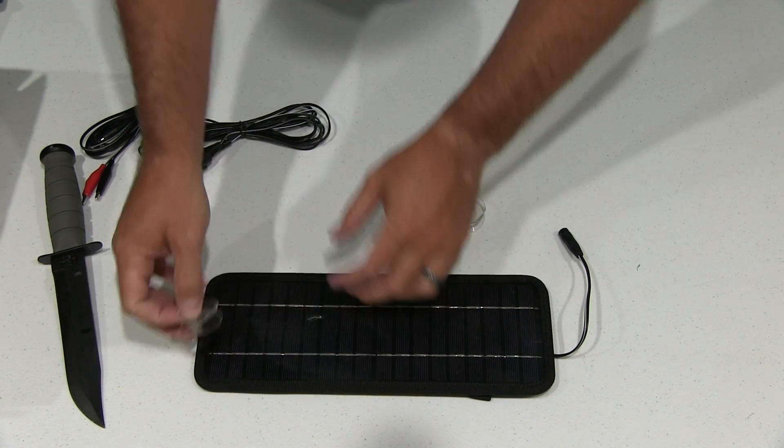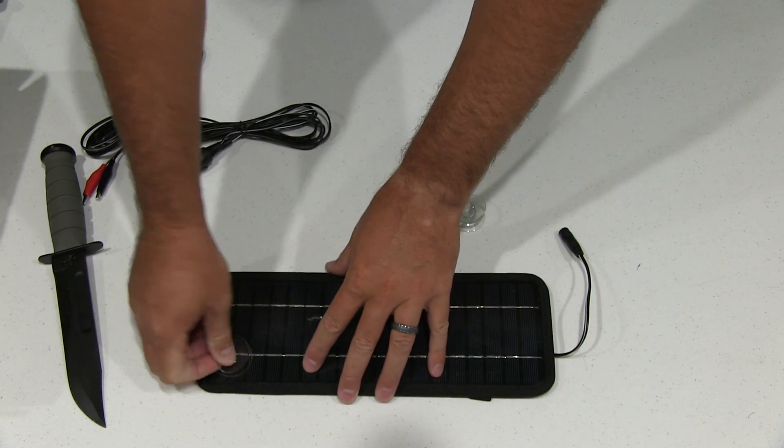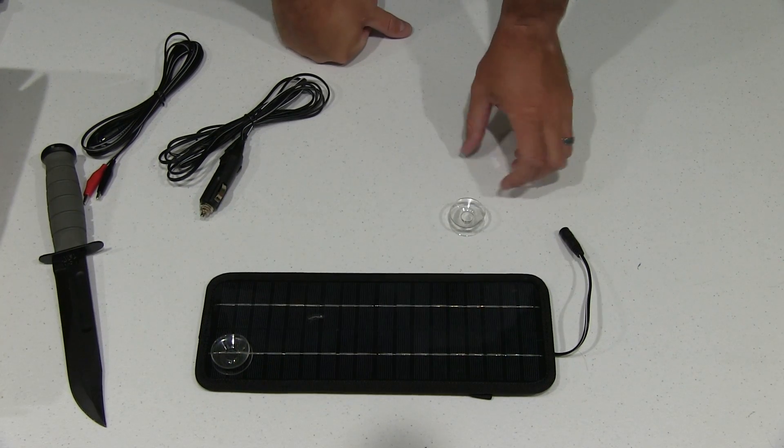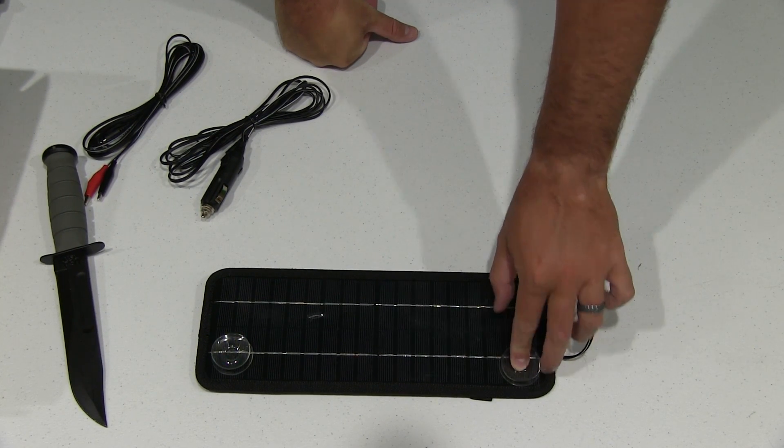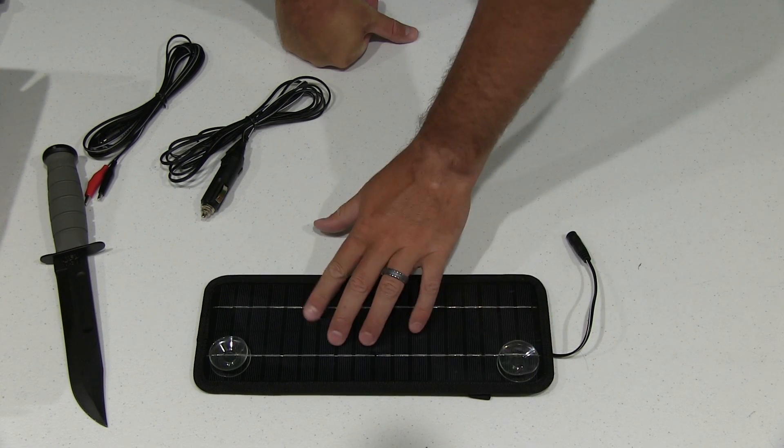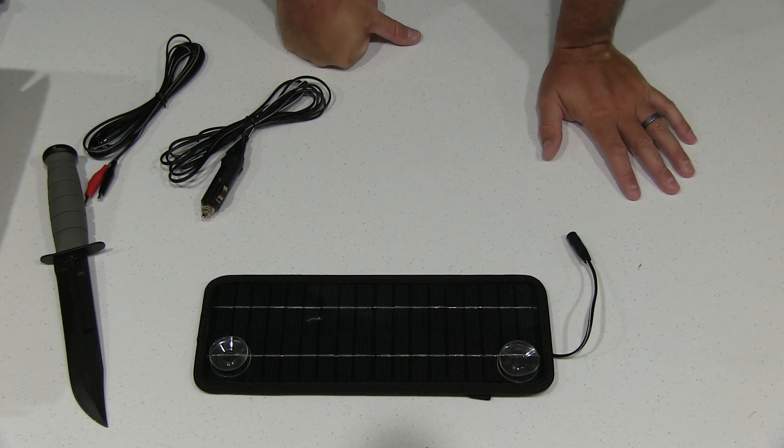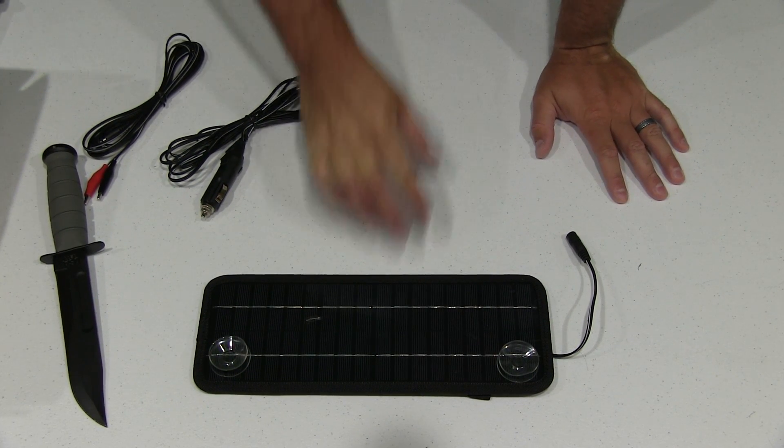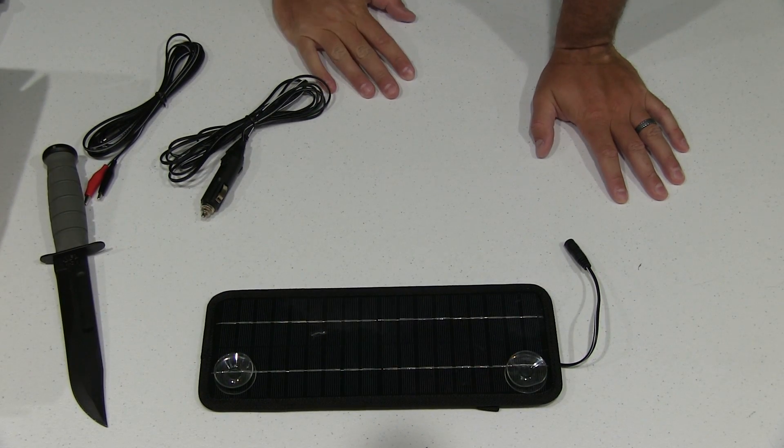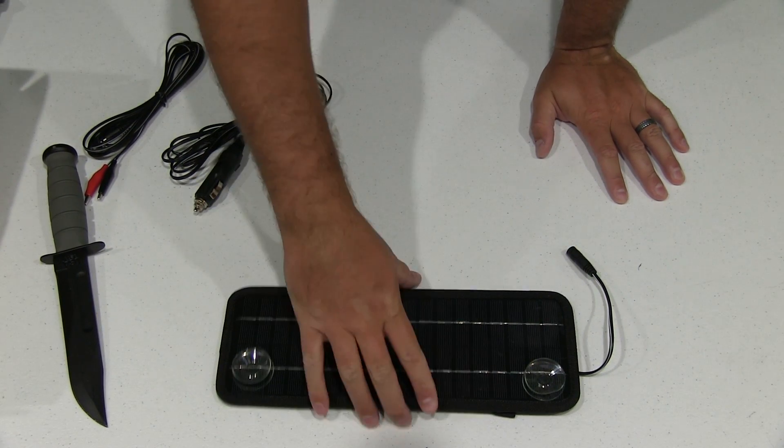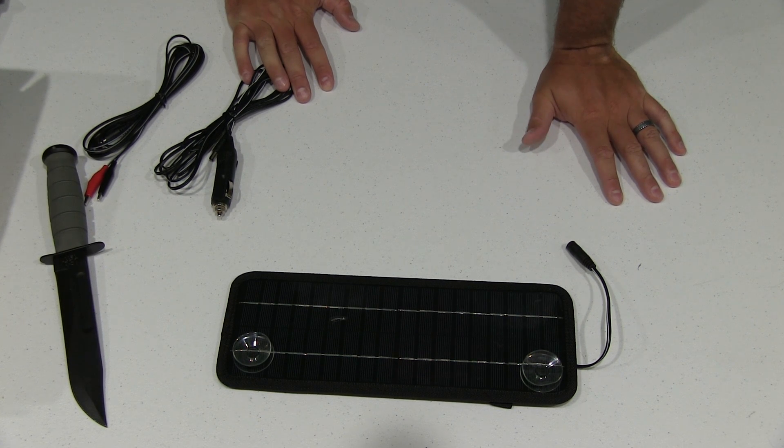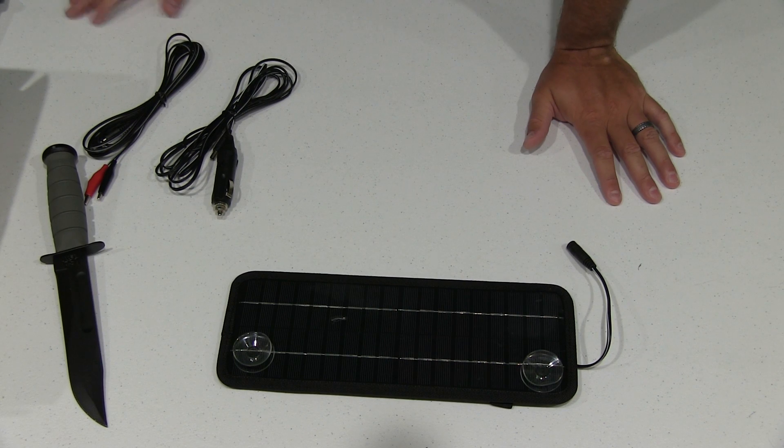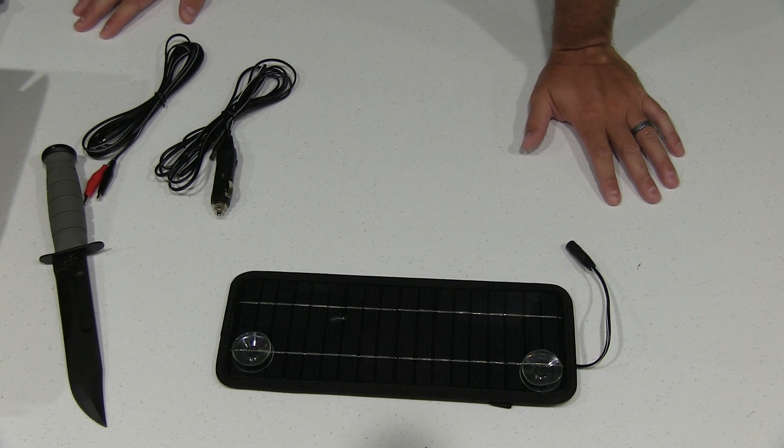And the reason I'm going to use this, I'm going to attach this to a window. And I'm going to let solar energy trickle charge a battery that is powering some LED light strips. So this is going to be the source of renewable energy for my off the grid LED solar light strip solution.